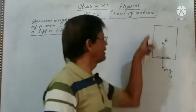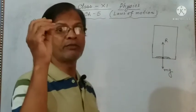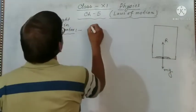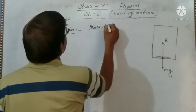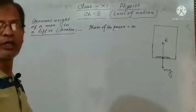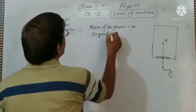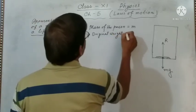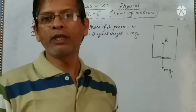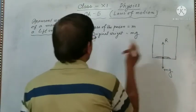This is a lift, and in this lift there is a weighing machine to check the person's weight. Suppose the mass of the person is m. So what will be the original weight? It is mg, and this will act as an action on the floor of the lift — that means on the weighing machine. The weighing machine will give a reaction force R.